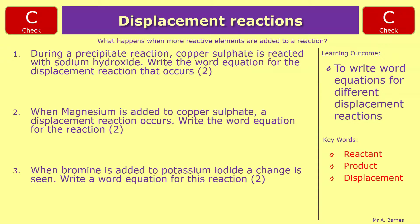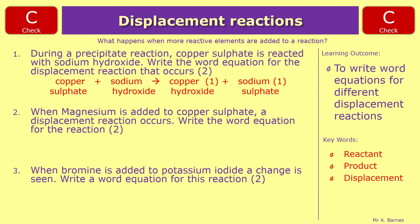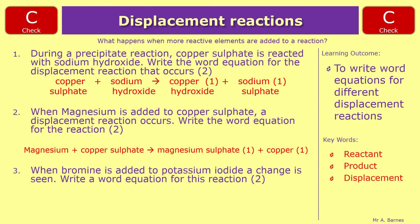Question one: copper sulfate reacting with sodium hydroxide — you swap the endings around, so you end up with copper hydroxide and sodium sulfate, one mark each. Question two: magnesium plus copper sulfate — magnesium is more reactive, so you end up with magnesium sulfate and copper. Question three: bromine added to potassium iodide — the endings are swapped, so you end up with potassium bromide and iodine.